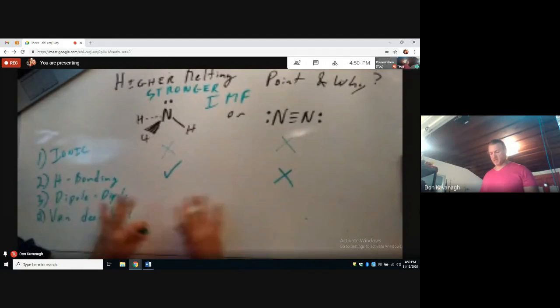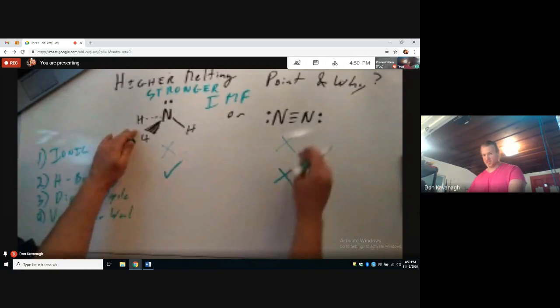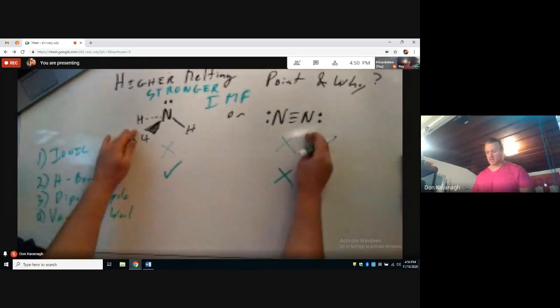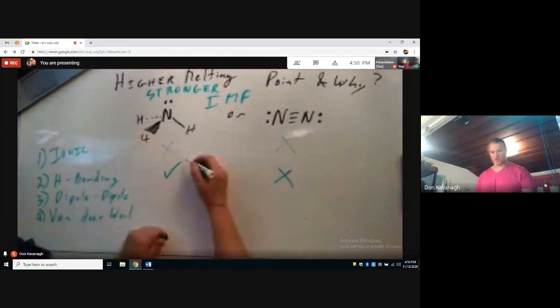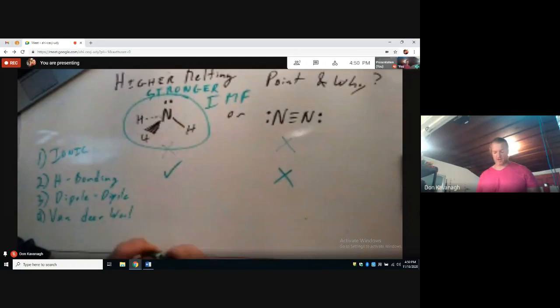With hydrogen bonding being present in ammonia, but not present in dinitrogen gas, this is going to have the stronger intermolecular force, and therefore have a higher melting point. We don't have to go down the rest of the list, because we took the list from strongest to weakest. Thank you.